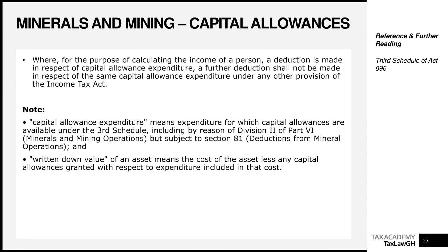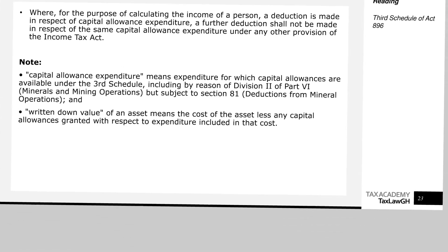The same principle applies: where for the purpose of calculating the income of a person a deduction is made in respect of capital allowance expenditure, you cannot make that same deduction twice. So to summarize: minerals and mining operations and petroleum are almost the same, apart from when it comes to the realization of assets. For petroleum assets, we include the full consideration received in determining the assessable income. For mining, we apply the A minus B and B minus A concept — though the law doesn't use that exact language.